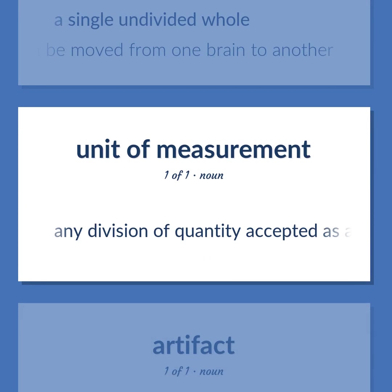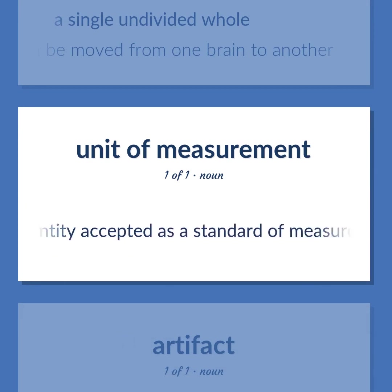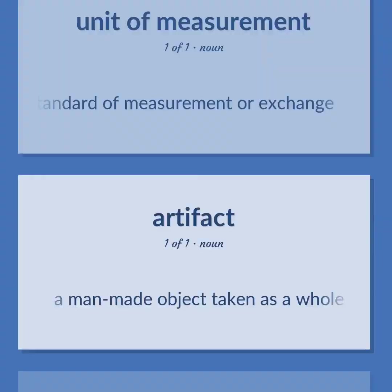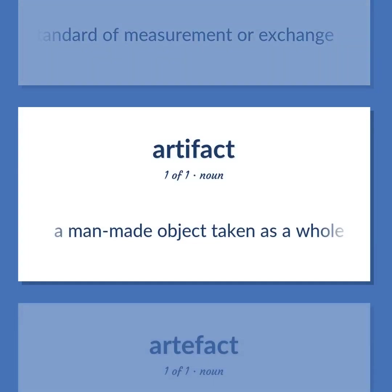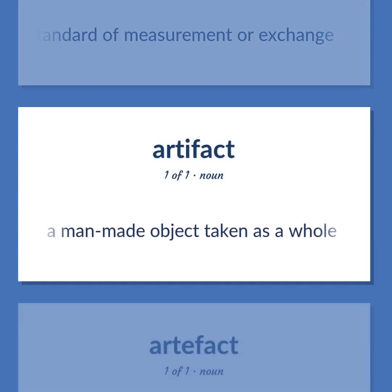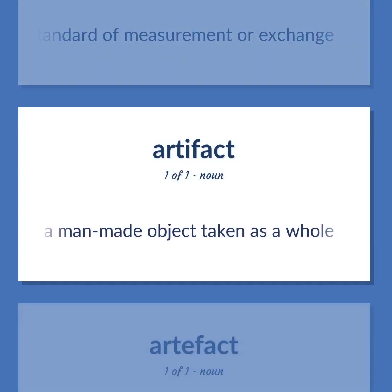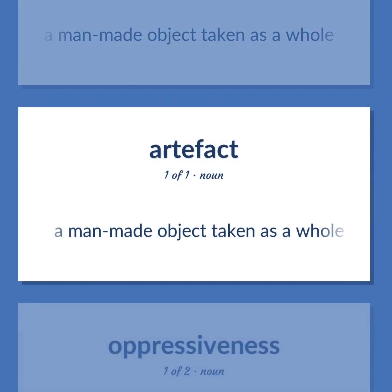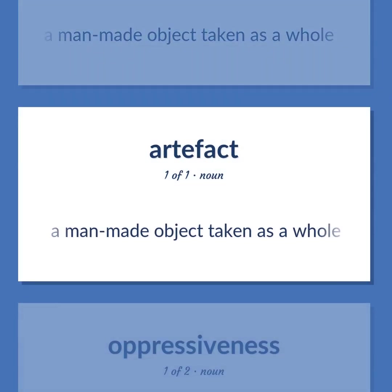Unit: A single undivided whole. Example: An idea is not a unit that can be moved from one brain to another. Any division of quantity accepted as a standard of measurement or exchange. A man-made object taken as a whole.